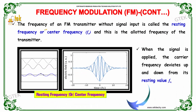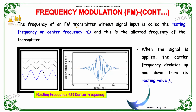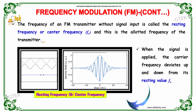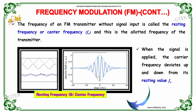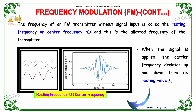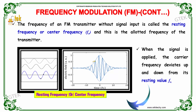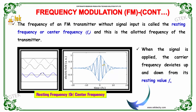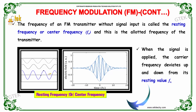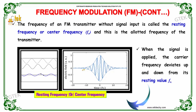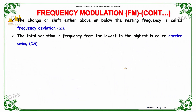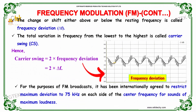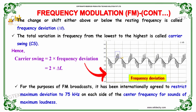The frequency of an FM transmitter without signal input is called the resting frequency or the center frequency. This is the natural frequency of the transmitter. When the signal is applied, the carrier frequency deviates up and down from its resting value.